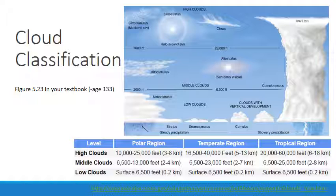Cirrus or cirriform clouds are high, white, and thin. They form delicate veil-like patches or wisp-like strands and often have a feathery appearance. Cirrus is the Latin word for curl or filament.